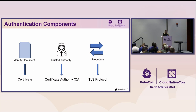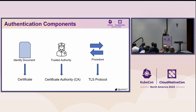There are many different types of identity documents. The most common tool for demonstrating identity and trust and sharing a public key within the context of a PKI is a digital certificate. A trusted authority is responsible for managing and issuing these digital certificates — typically a certificate authority. The most common procedure used by entities to share certificates and keys is the Transport Layer Security protocol, or TLS.